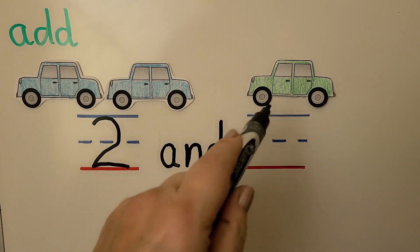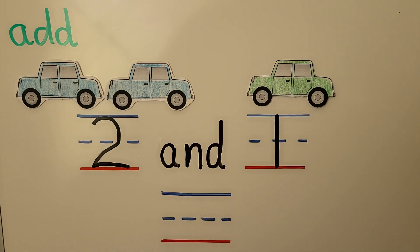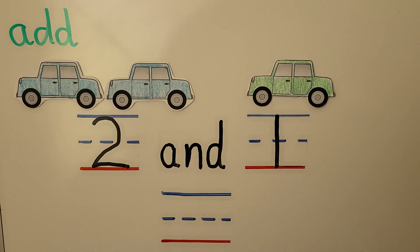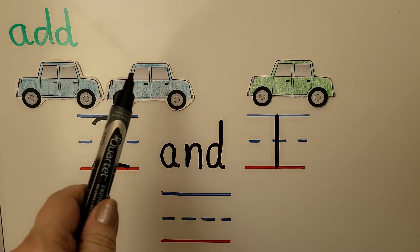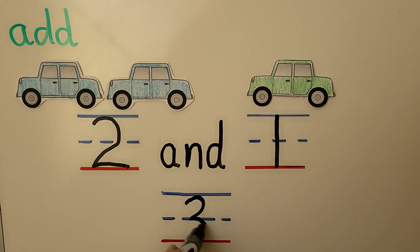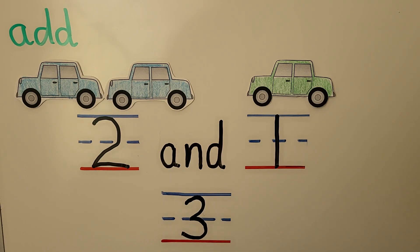Here we have one. The word 'and' tells us to add. We count all the cars together: one, two, three. We write how many — it's three. Two and one is three.